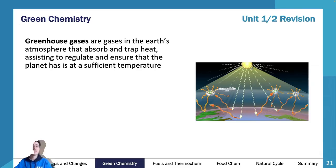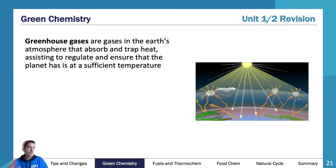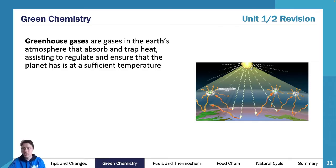Greenhouse gases are gases in the earth's atmosphere that absorb and trap heat, assisting the system to regulate and ensure that the planet has sufficient temperature.